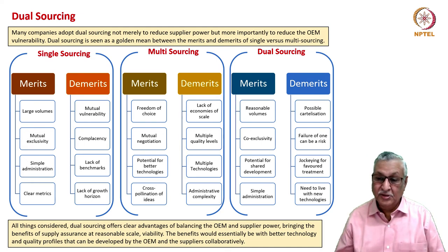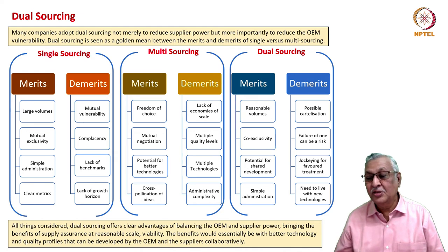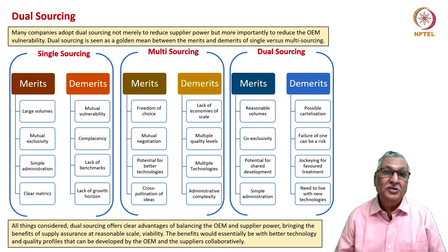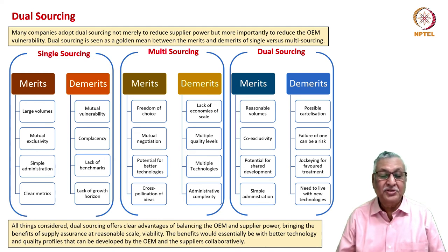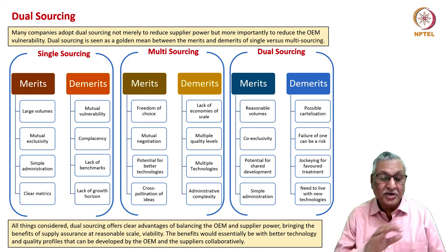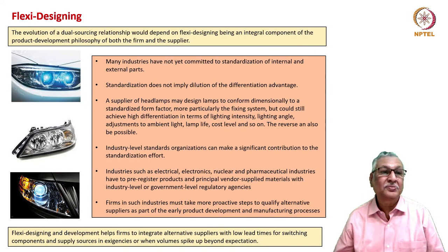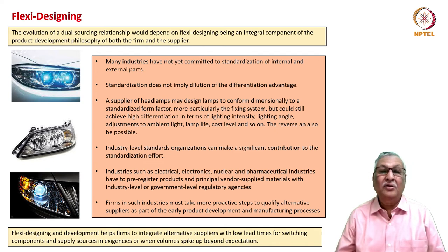A golden mean between single sourcing and multi-sourcing is dual sourcing, which offers reasonable volumes, co-exclusivity, potential for shared development and simple administration. Demerits include possible cartelization of the two suppliers, risk if one fails, jockeying for favored treatment, and the need to live with multiple technologies. All things considered, dual sourcing offers clear advantages of balancing OEM and supplier power, bringing supply assurance at reasonable scale and viability, and enabling better technology and quality profiles to be developed collaboratively. Dual sourcing works best when combined with flexi designing at either the component maker or OEM level.